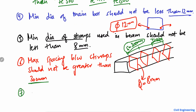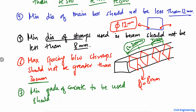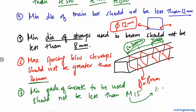The seventh point is that the minimum grade of concrete to be used to construct the beam should not be less than M15. M15 means the mix ratio of the concrete is 1:2:4, and its characteristic compressive strength is 15 megapascals.